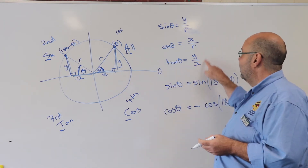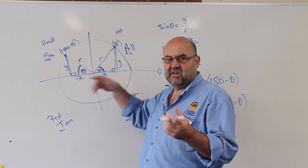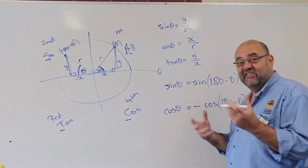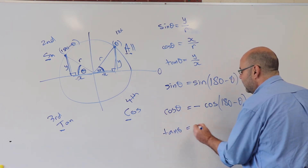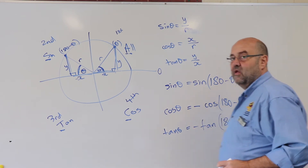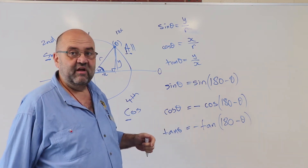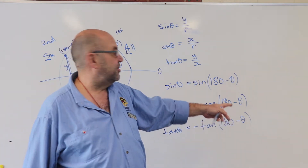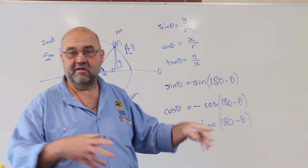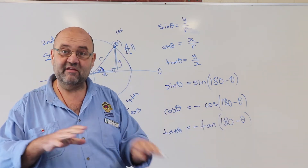Tan of theta is y over x. At 180 minus theta, we get y over negative x, which is negative. So tan(θ) is the negative of tan(180 minus theta). Verify this too: check what cos(30) is, then check the negative of cos(150). Same with tan: tan(30) should equal the negative of tan(150). Go ahead and confirm these on your calculator.